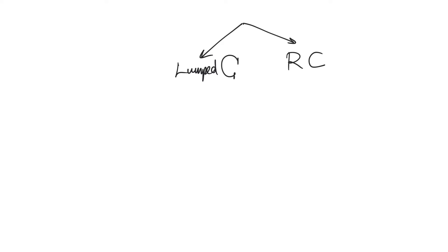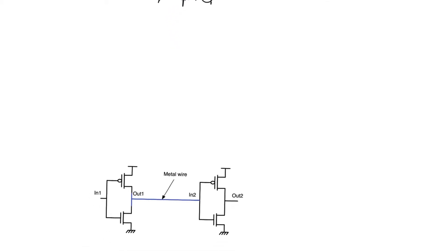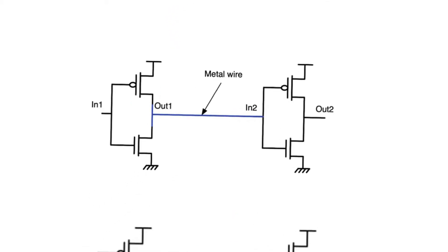Let's first look at the lumped C model. This is a model that we will apply almost exclusively for metal wires. This makes sense in older technologies where the resistance of wires was pretty insignificant compared to their capacitance, because older wires used to be wide, relatively long, and also relatively thick — so they had a small resistance and a large capacitance.